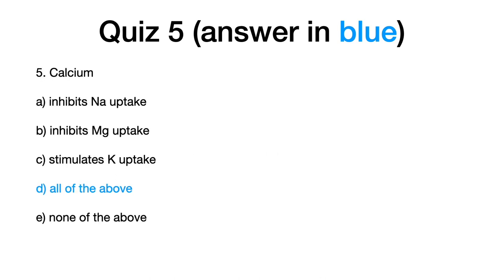Five, calcium. And the correct answer is D, all of the above, which includes A, it inhibits sodium uptake, B, calcium inhibits magnesium uptake, and C, calcium stimulates potassium uptake.